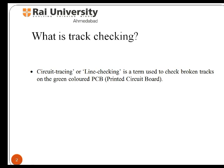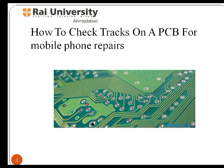A printed circuit board mechanically supports and electrically connects electronic components using conductive tracks, pads, and other features. Printed circuit boards are used in all but the simplest electronic products, like mobile phones. Alternatives to PCB include wire wrap and point-to-point construction. PCBs require additional design effort to lay out the circuit, but manufacturing and assembly can be automated.